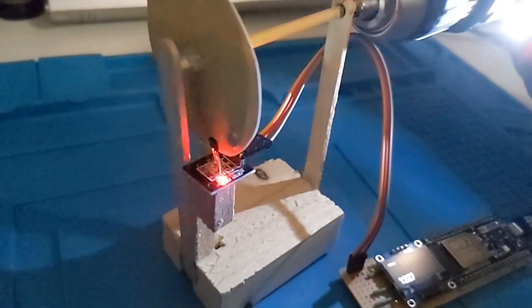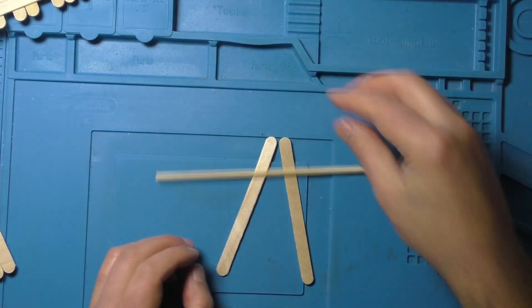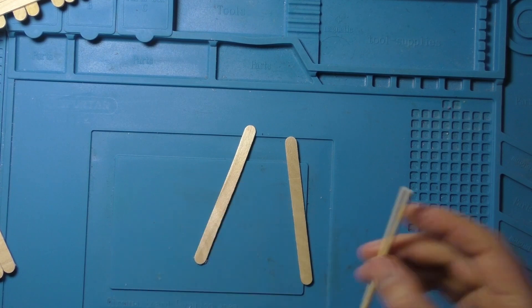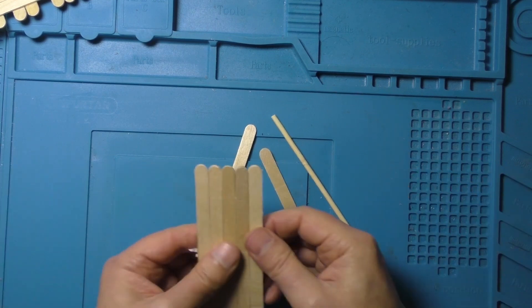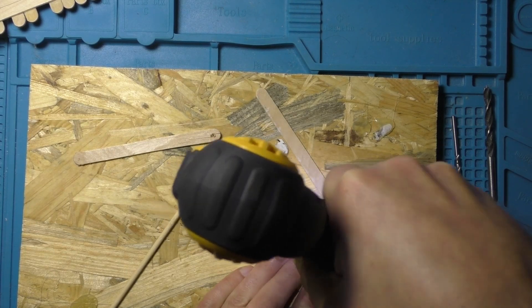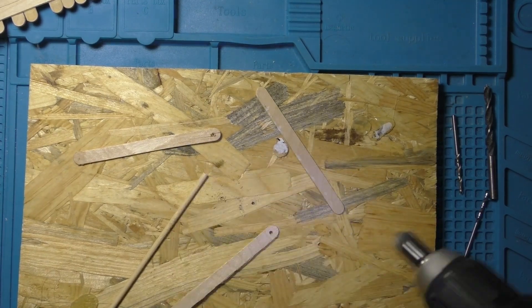Popsicle sticks or lolly sticks as they're called in England. The plan is that I want to be able to measure the performance of different electric motors, so how much power they take and how fast that makes them spin.